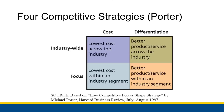Putting these two axes together gives us a quadrant of four different strategies: low cost industry-wide, differentiation industry-wide, low cost focus, and differentiation focus. Once we as a business have determined our competitive strategy — how we're going to stand out — we're then going to focus on what systems we need to implement in order to achieve that strategy. That's going to be the next set of videos: working on the actual systems we use to achieve our strategy.